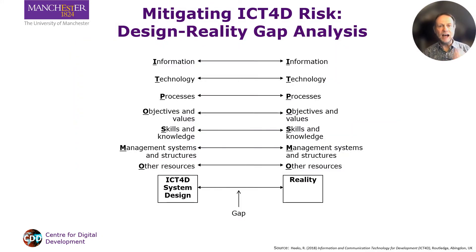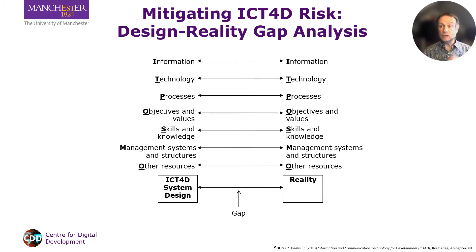The first is to undertake design-reality gap analysis during implementation. Using a checklist like the POSMO dimensions shown here, you evaluate the differences between design and reality and take action on large gaps. This might mean changing design — for example, making greater use of existing data and technology, or automating existing processes rather than also re-engineering them. Or it might mean changing reality, using incentives to change stakeholder motivations or undertaking training to build user skills.